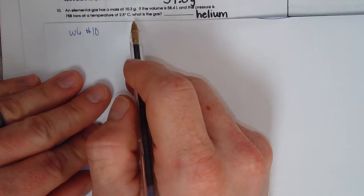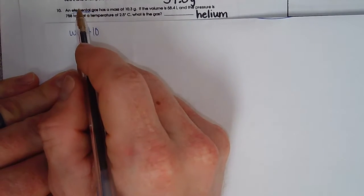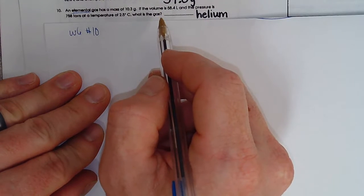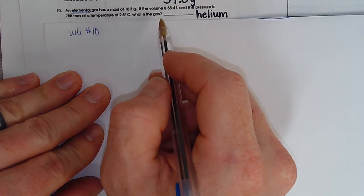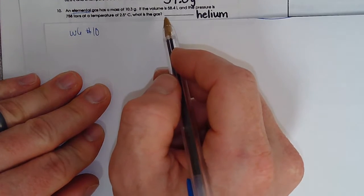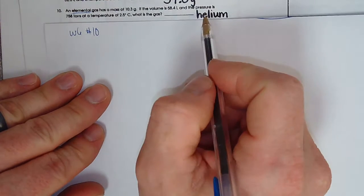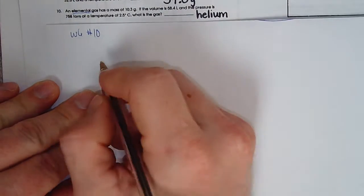And it also tells us elemental. So we know it is an element and it's a gas. And that narrows down the elements quite a bit because most of them are not gases at room temperature. So it's probably either hydrogen or nitrogen or oxygen or fluorine or one of the noble gases. And it looks like it's going to end up being helium. Let's see if we can prove that.